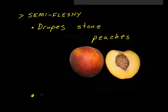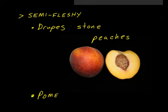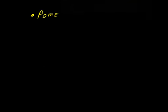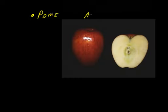The second type of semi-fleshy fruit is referred to as a pome. You may have heard of or be familiar with pomegranates, which have become much more popular in recent years. But what you're probably more familiar with as an example of a pome are apples.